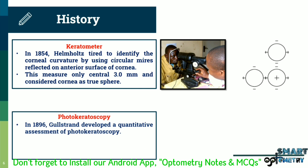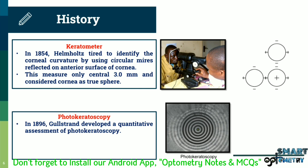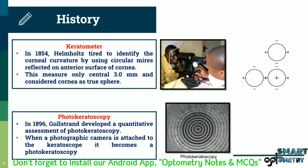In 1896, Gullstrand developed a quantitative assessment of photokeratoscopy. When a photographic camera is attached to the keratoscope, it becomes photokeratoscopy, allowing the observer to photograph and document the shape of the patient's cornea.